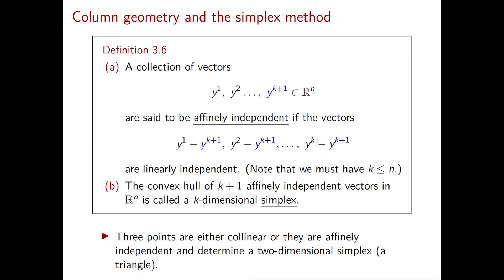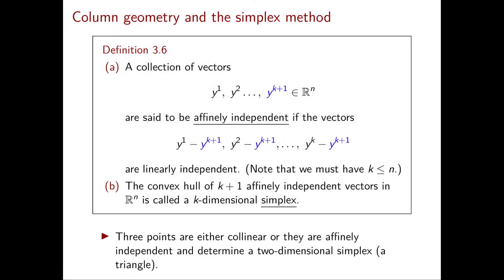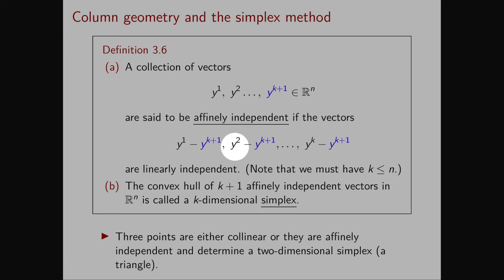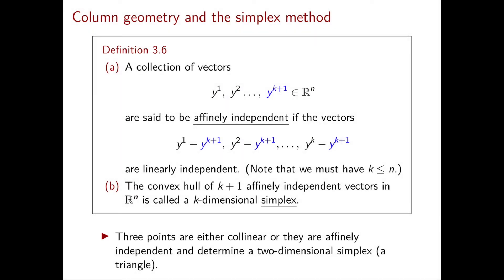To proceed further with our geometric interpretation I need to define a simplex, and to do that I need to define what it means for a set of vectors to be affinely independent. A set of vectors y1, y2, ..., y_{k+1} are said to be affinely independent if the k+1 vectors y1 minus y_{k+1}, y2 minus y_{k+1}, ..., yk minus y_{k+1} are linearly independent. Essentially we pick one of the original vectors and subtract it from all the others.